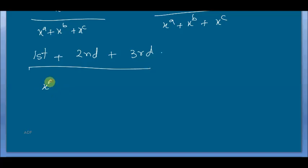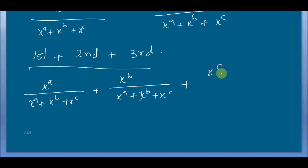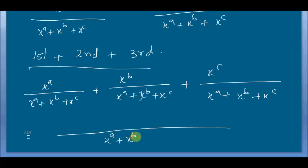You will get x^a by x^a plus x^b plus x^c, plus x^b by x^a plus x^b plus x^c, plus x^c by x^a plus x^b plus x^c. You take the LCM of the three expressions.